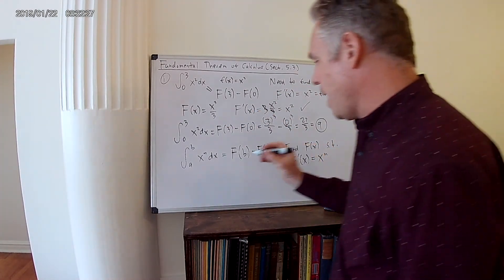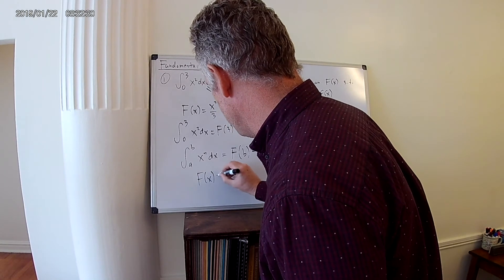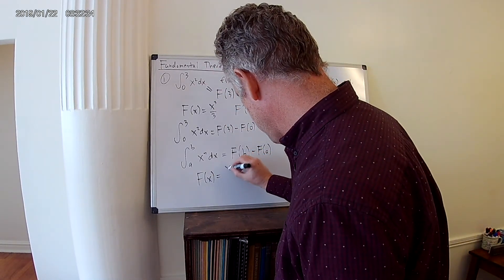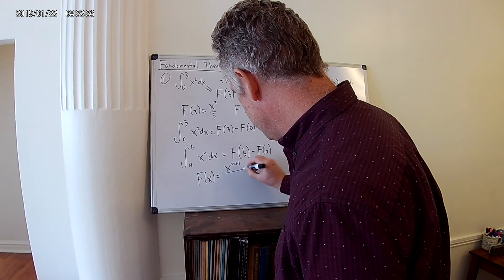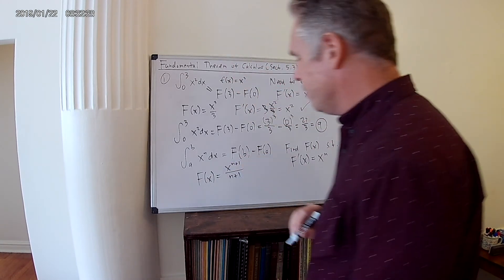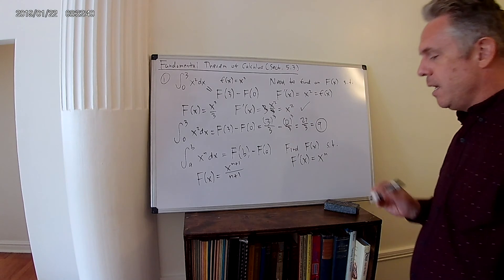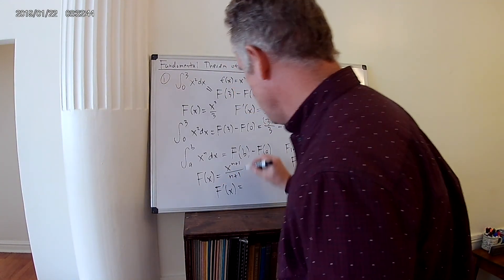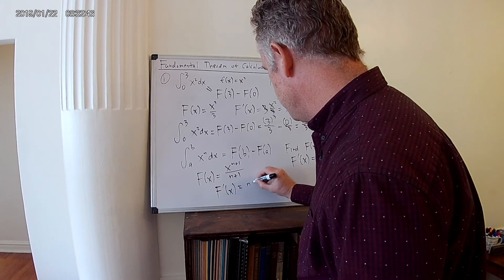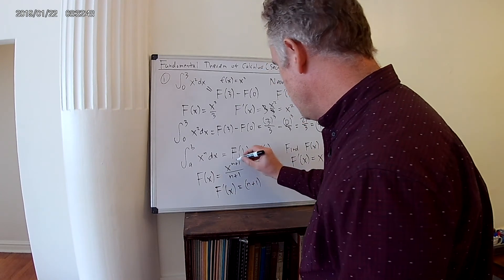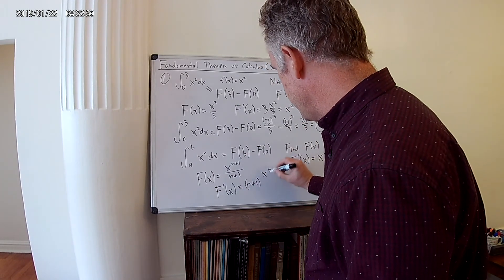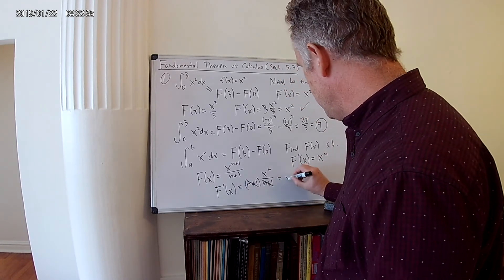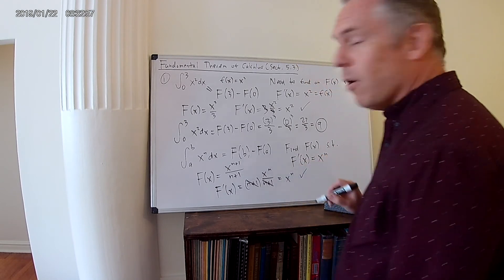Well, here's a good guess. You might not know how to guess this, but after a while you figure out a good guess. What if F(x) were x to the n+1 divided by n+1? Then, if I took the derivative, F'(x), I would bring down an n+1. I reduce this power by 1. I get x to the n over n+1. These n+1s cancel, and I just get x to the n.